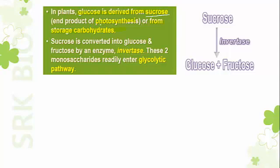Sucrose is a product of photosynthesis. It is then converted into one molecule of glucose and one molecule of fructose by an enzyme called invertase. These two monosaccharides readily enter into the glycolytic pathway.